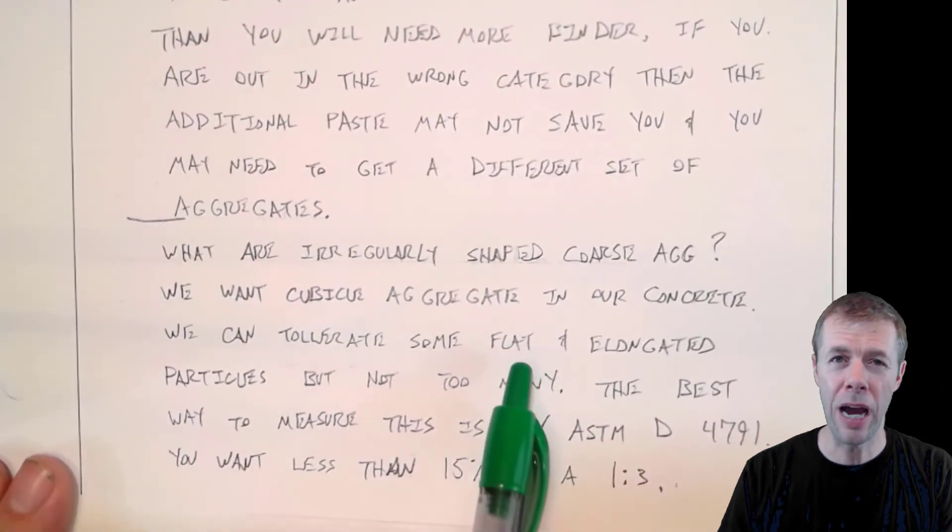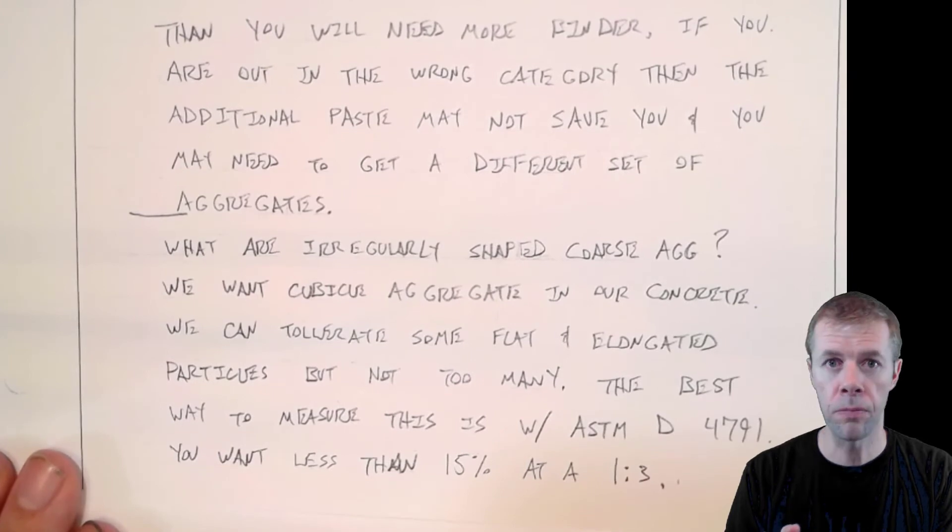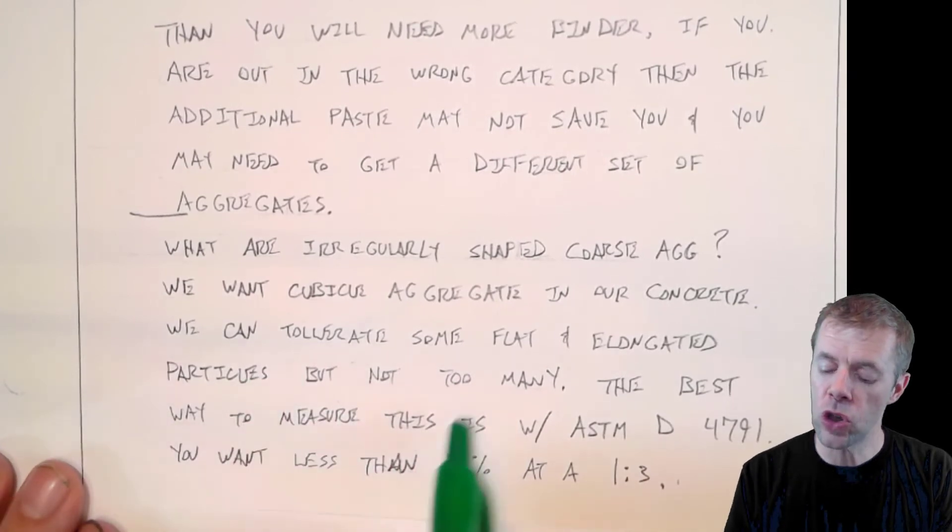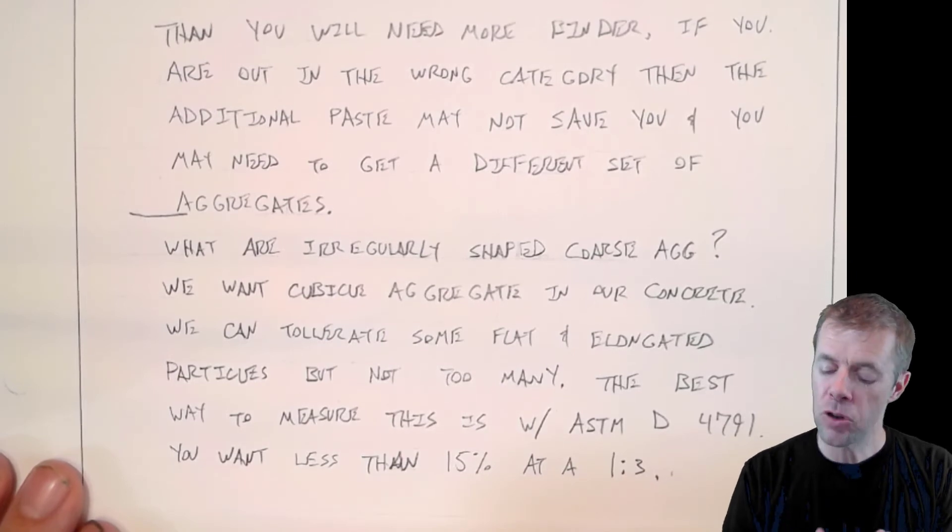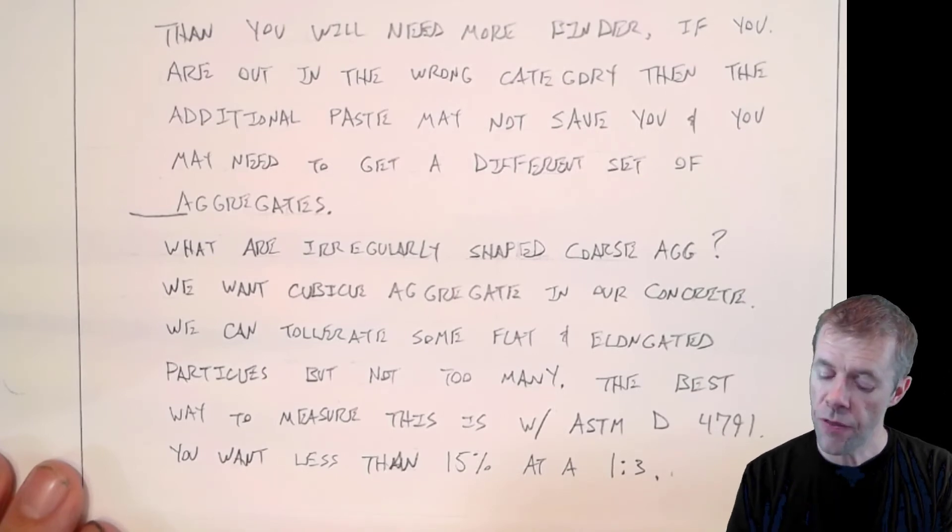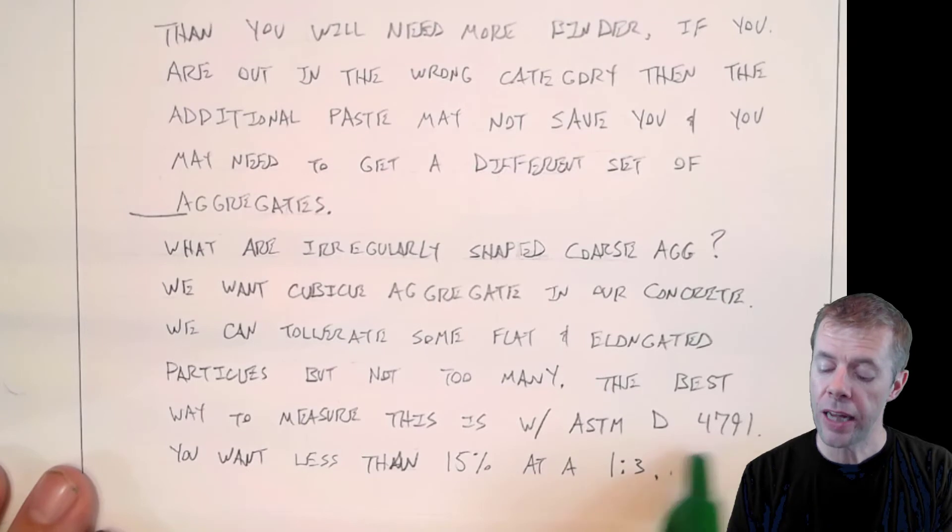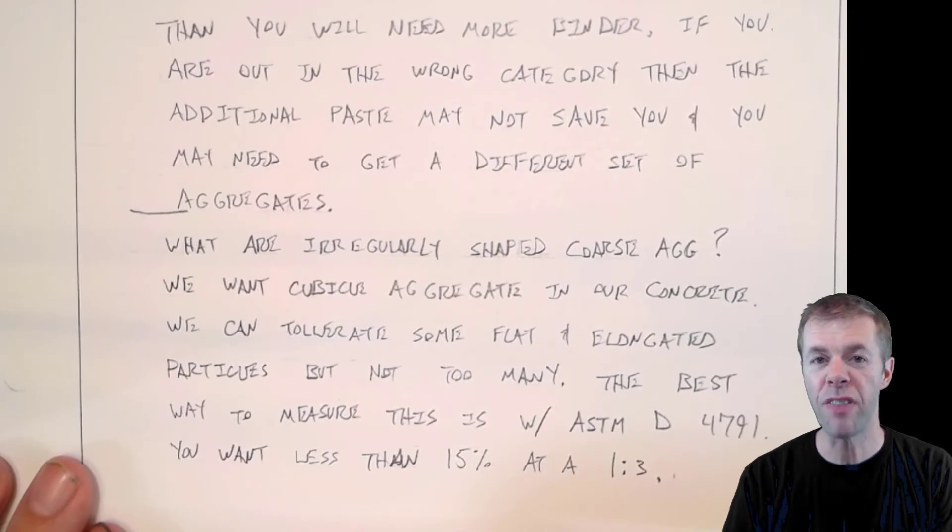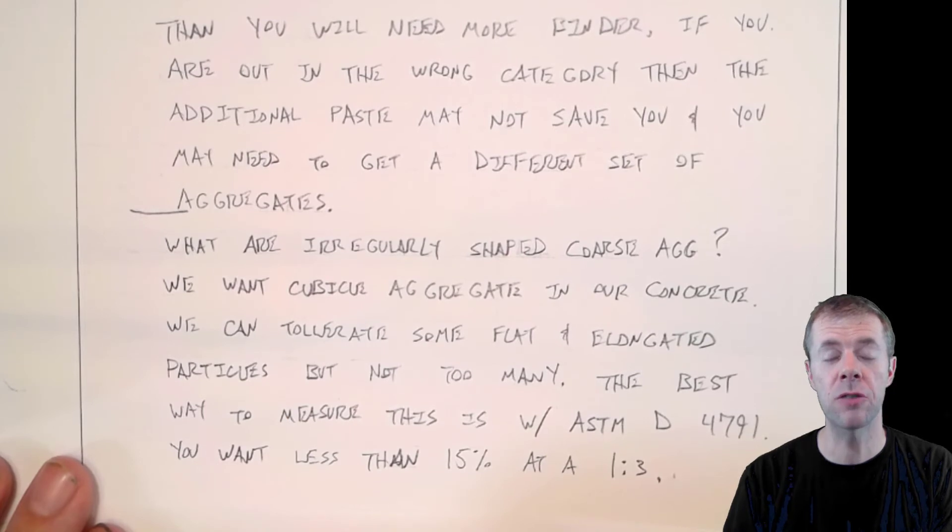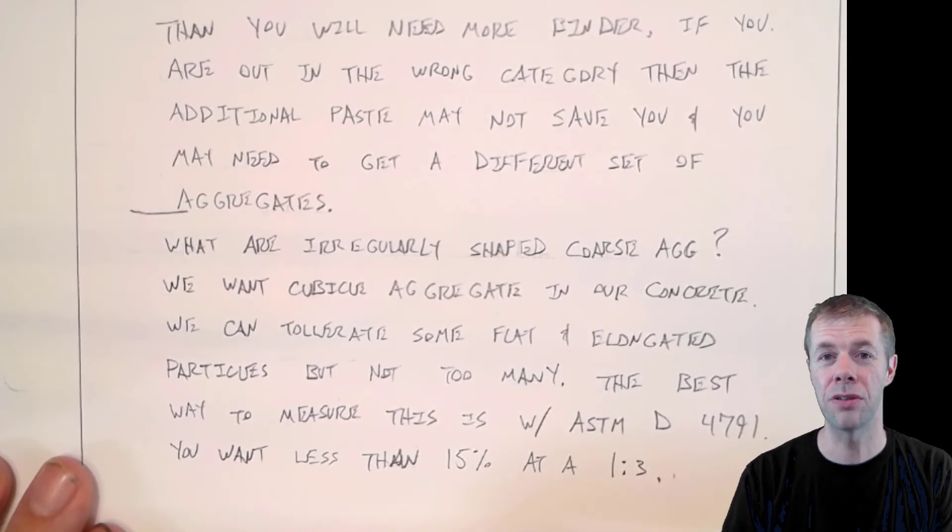So what are irregularly shaped aggregates? Well, we want cubical aggregates in our concrete. I've talked about this previously. I'll have another video in the notes. So you can actually look that up if you want. And we can tolerate some flat and elongated particles. They don't have to all be perfect cubical shapes. That's what we're after, cubical shapes. You can deal with some, but we've found, based on our research, that the best way to measure this is the ASTM D4791. Again, I talked about this in another video. And you want less than 15 percent at a one to three ratio. That means the long dimension to the short dimension being three, you want less than 15 percent of those. If you can have that, then that's a fine shaped aggregate. That's primarily cubical. But if you start to get outside of this limit, you start to see like you need more binder. You need more paste to make that mixture work.